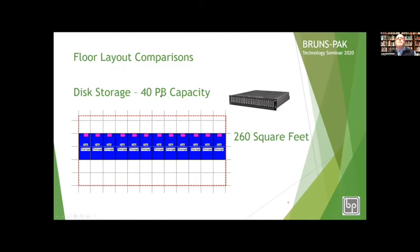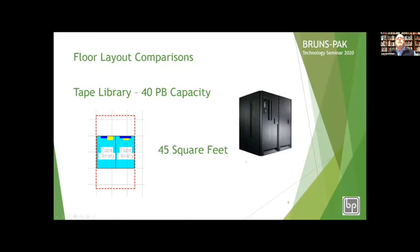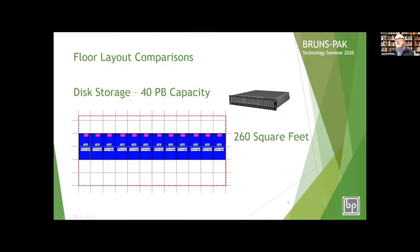This is a 40 petabyte solution of spinning disk — 12 racks, standard 24-inch by 48-inch deep racks. These racks are full, and this takes up 260 square feet of space, as opposed to 45 square feet. To make sure this is apples-to-apples: there's high-end enterprise disk and then lower-end JBOD disk, and this is the lower-end disk, which is typically used in a backup scenario.